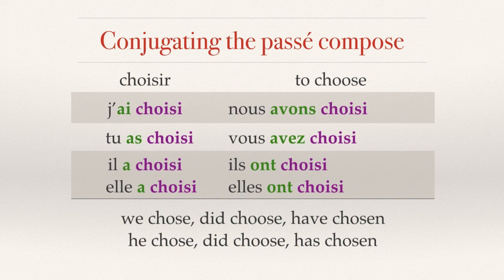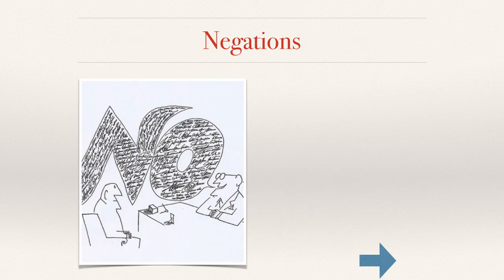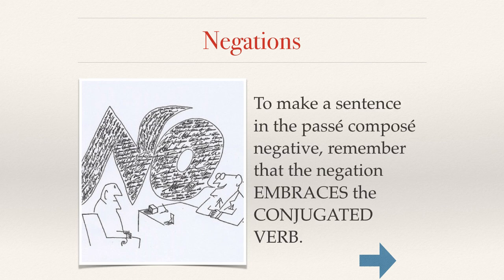Again, pause, rewind, whatever you need to do — take notes. How do we make negations with this? We've got two verbs. Where do we put our ne...pas, or our ne...rien, or our ne...jamais? Well, your negation is going to embrace or hug the conjugated verb — which is avoir.